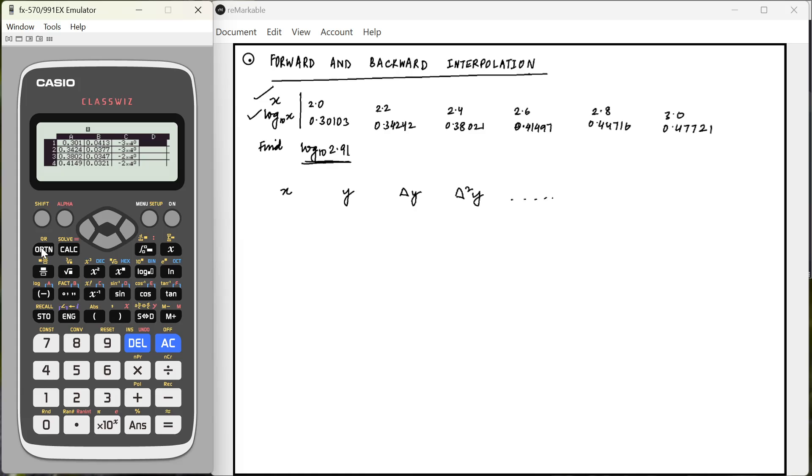And then again, in column D, we will go to option fill formula. Formula would be C2 minus C1. Range will be D1 to D3.